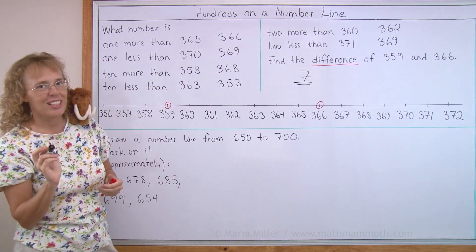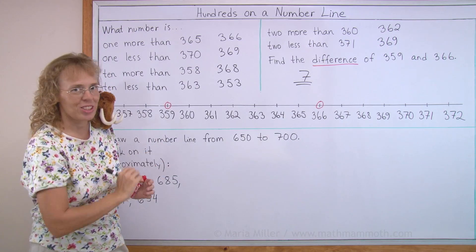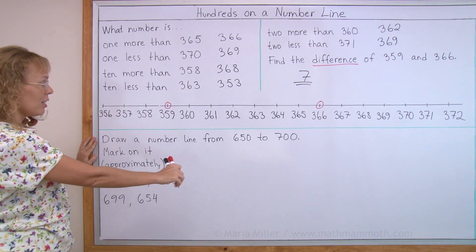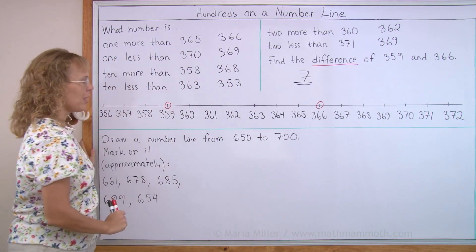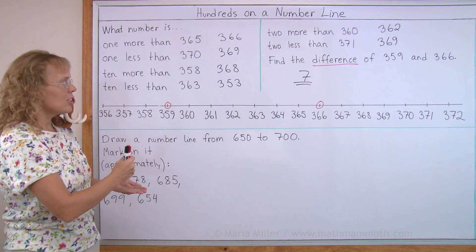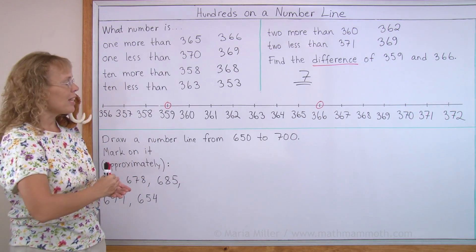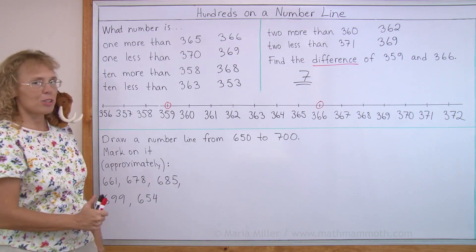Of course, you can also find it by subtracting or thinking of the how many more addition. Draw a number line from 650 to 700. Okay. Yes. I'm going to draw it. And I'm going to put tick marks into it, not by every one, but every 10. Mark on it these numbers. But first we will draw the number line.